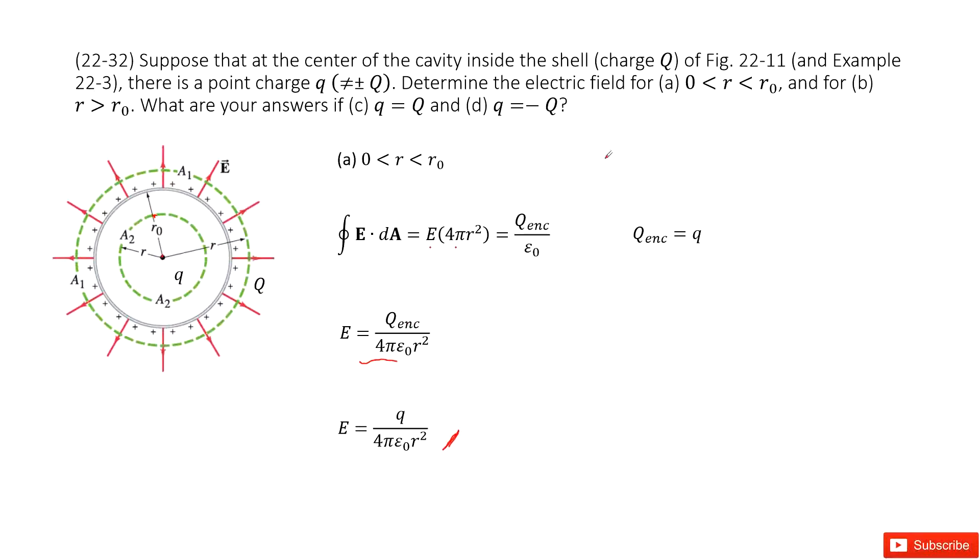The next case, the location r is larger than R0, so we can draw a Gaussian surface like this one. For this case we still apply Gauss's law.